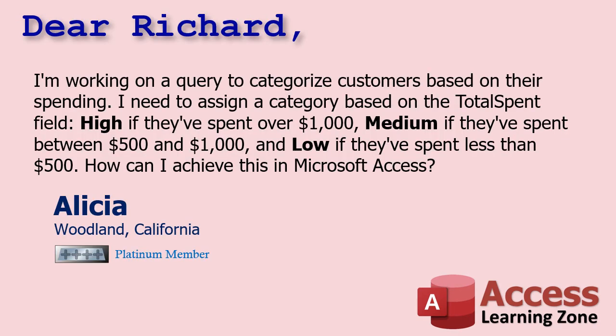Today's question comes from Alicia in Woodland, California, one of my Platinum members. Alicia says: I'm working on a query to categorize customers based on their spending. I need to assign a category based on the total spent field — high if they spent over a thousand, medium if they've spent between five hundred and a thousand, and low if they've spent less than 500. How can I achieve this in Microsoft Access?